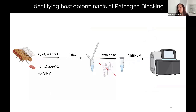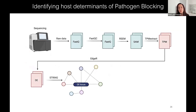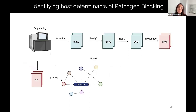Amelia reared flies of the same genetic background with and without Wolbachia, with and without Sinbus virus, waiting 6, 24, and 48 hours post-injection. She extracted total RNA, reduced ribosomal content, and ran it on an NEB-NEXT instrument. The raw data was run through quality control metrics and mapped to the Drosophila, Wolbachia, and virus genomes using RSEM to normalize for library size and get transcripts per read, then input into EDGE-R to calculate differentially expressed genes.